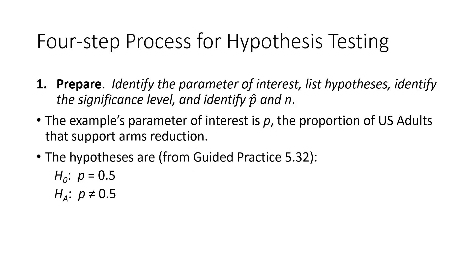The hypotheses are, and we got these from the textbook from Guided Practice 5.32, that the population proportion is equal to 0.5 for the null hypothesis, and the alternative hypothesis is that the population proportion is not equal to 0.5. Keep in mind the null hypothesis always expresses a statement of equality, and the alternative hypothesis always states an inequality.